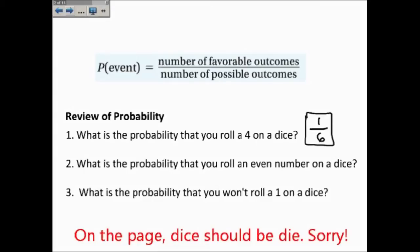Number 2, what is the probability that you will roll an even number on a dice? Well, how many even numbers are there on a dice? There are 3 out of 6, or simplified to be 1 half.